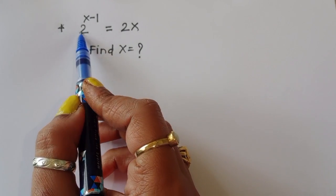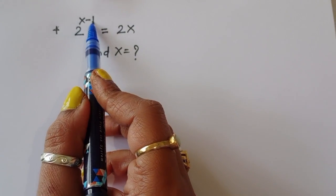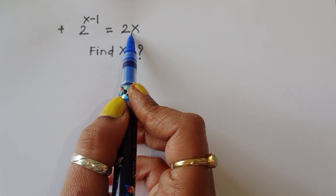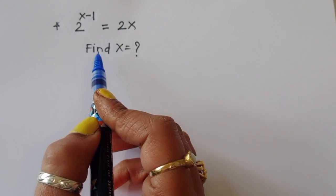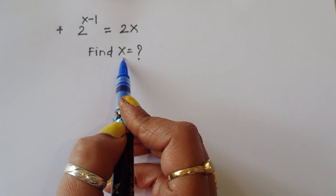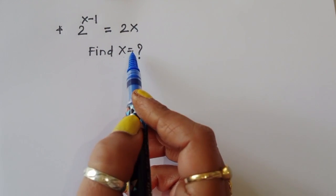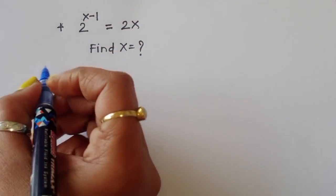The question is: given 2 power x minus 1 is equal to 2x, we have to find out the value of x. Let's see the solution.